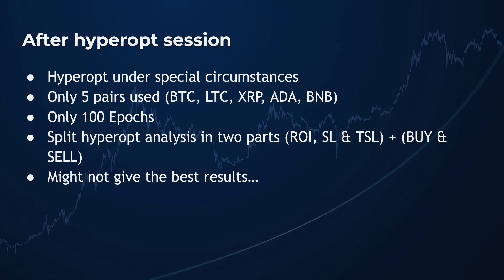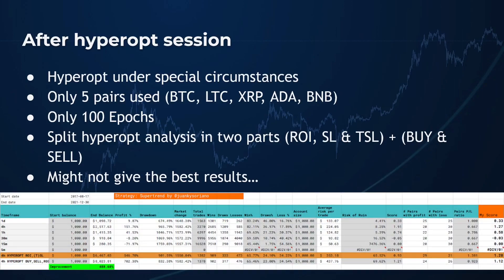I'll leave all these settings and files on my website for reference. When you stick to the default SuperTrend indicator parameters and only look for better ROI, stop loss, and trailing stop loss settings, you get better results compared to the original settings — but they are not spectacular. Changing the SuperTrend indicators after that gave even better results, though the win rate gets slightly worse and these settings don't work as well on all pairs. With my scoring calculation, only the ROI and stop loss change gets slightly better results, but these hyperopt sessions didn't go as originally planned, so the results should be taken with some skepticism.